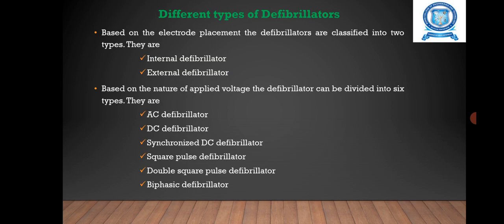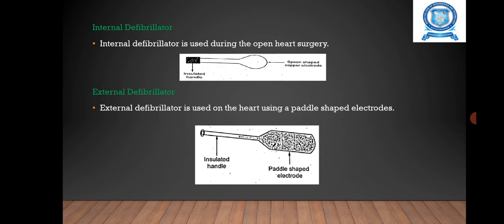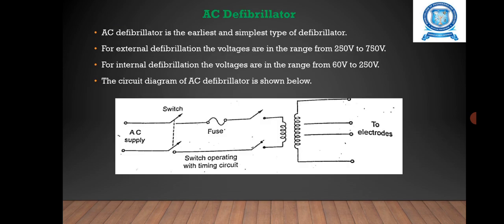The internal defibrillator is used during open heart surgery. Large spoon-shaped electrodes with insulated handles are used. The external defibrillator is used on the heart using paddle-shaped electrodes.